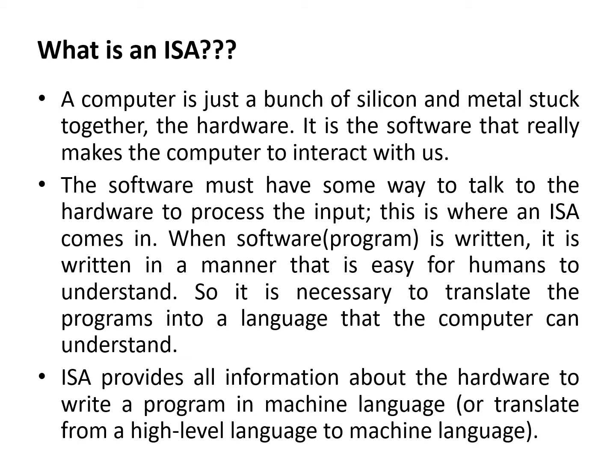When a software program is written, it is written in a manner that is easy for humans to understand. So it is necessary to translate the programs into a language that a computer can understand. The ISA provides all the information about the hardware to write a program in machine language, or to translate a program from a higher-level language to the machine language which can be understood by a particular machine.